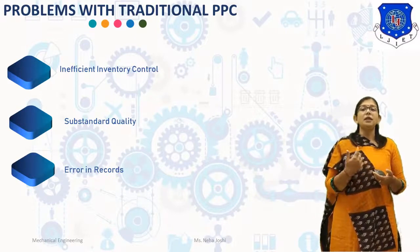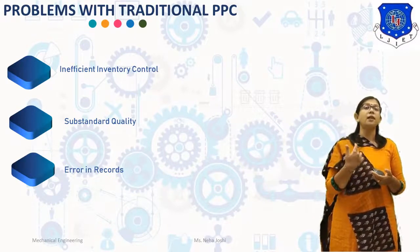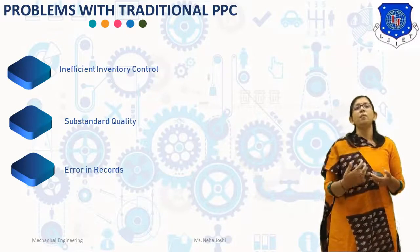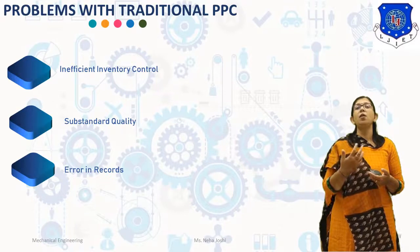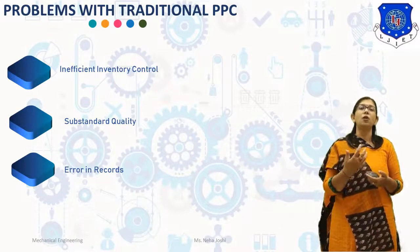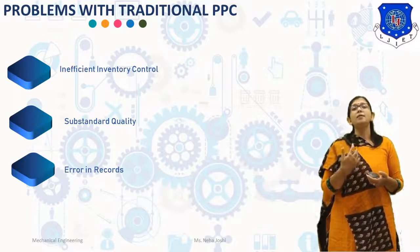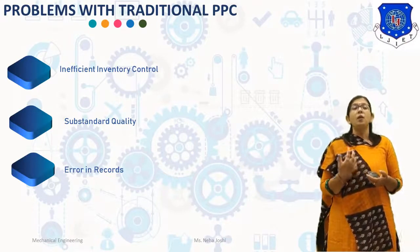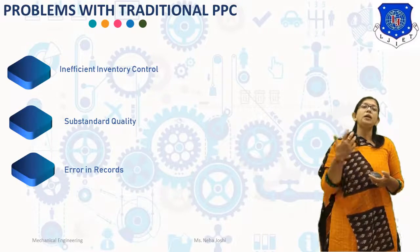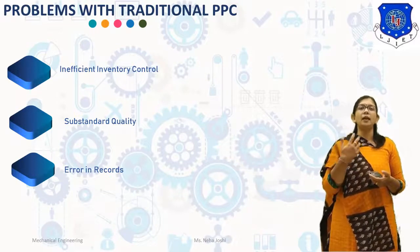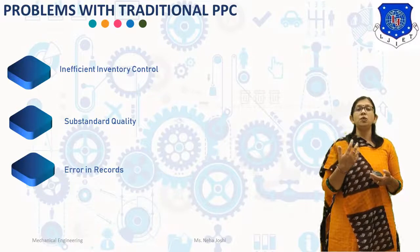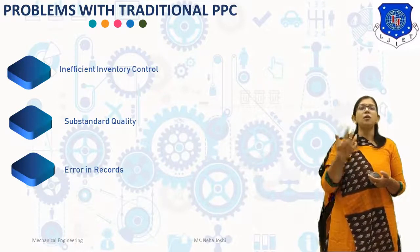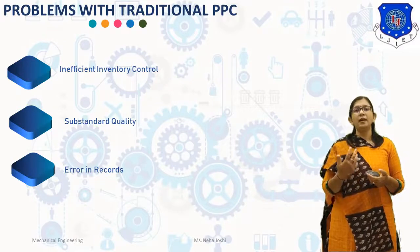The last problem with traditional PPC is Errors in Records. Because of the faulty process, the process sheets are not updated, the bill of materials is not correct, and the inventory records are not up to date. Thus, there are errors in records at all levels. This is what traditional production planning and control covers — its functions and the problems associated with it.